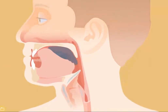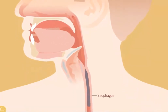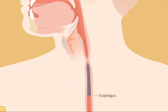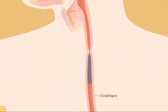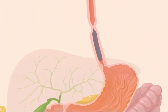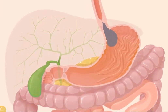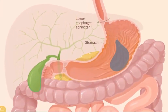The food bolus passes through the pharynx and into the esophagus. Peristalsis, which is rhythmic contractions of the muscle layers, pushes the bolus down the esophagus. The bolus passes into the stomach through the lower esophageal sphincter. This sphincter normally remains closed, preventing reflux of the stomach contents.